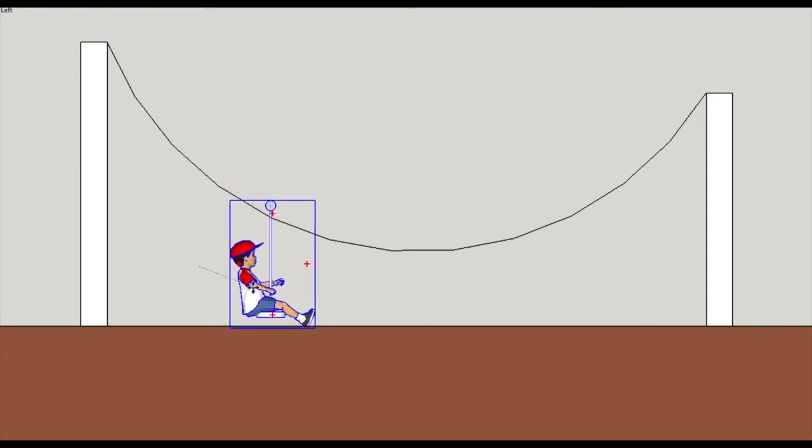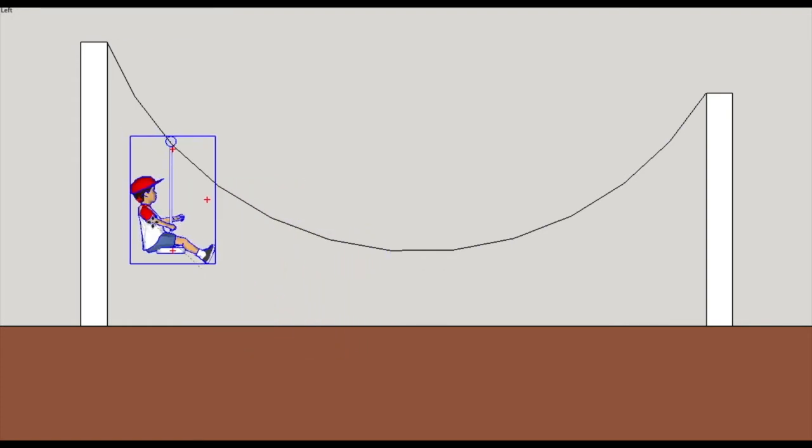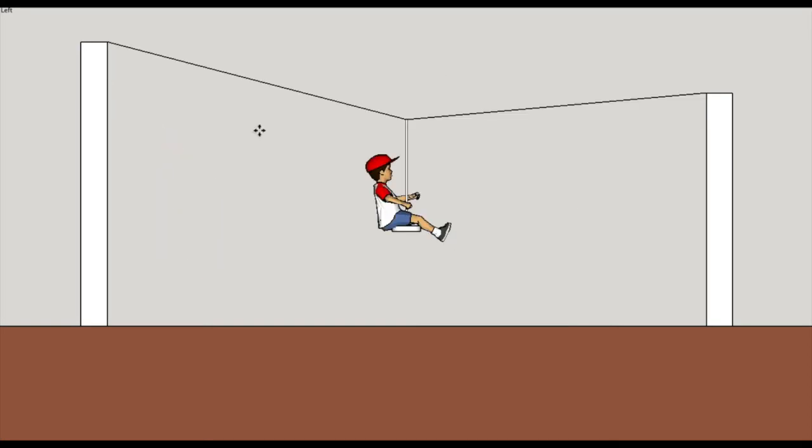So the zip line has to be between those two extremes. This represents something that looks pretty reasonable. As the kid rides down the zip line, there's a little bit of a dip but not enough that the kid hits the ground.